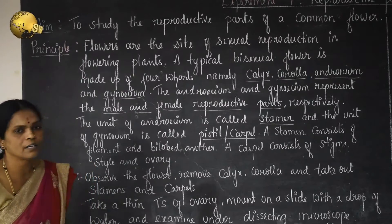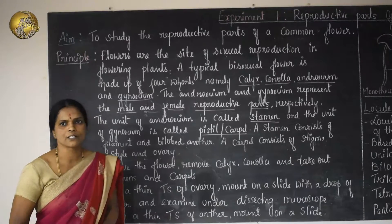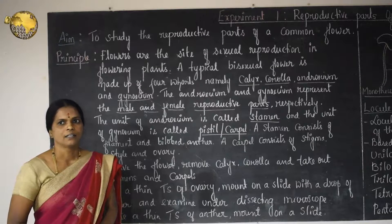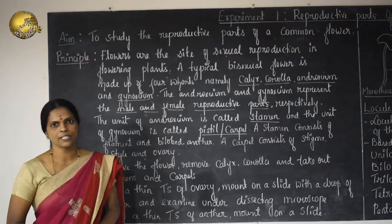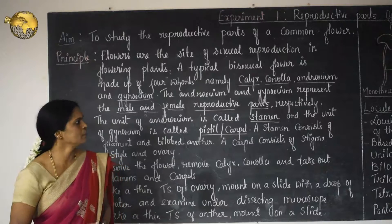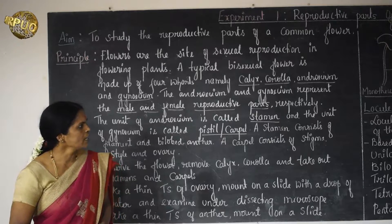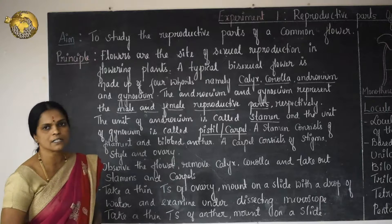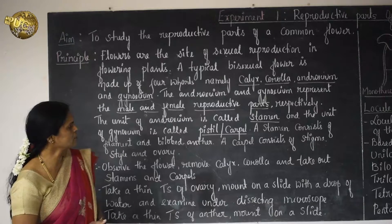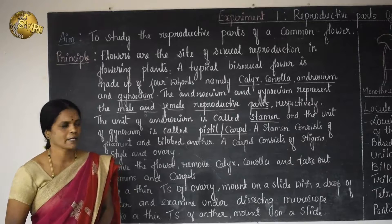The principle involved in this experiment is that flowers are the site of sexual reproduction in flowering plants. A typical bisexual flower is made up of 4 whorls, namely Calyx, Corolla, Androecium, and Gynoecium. The Calyx and Corolla are non-essential whorls, while the Androecium and Gynoecium are the essential whorls, representing the male and female reproductive parts respectively.